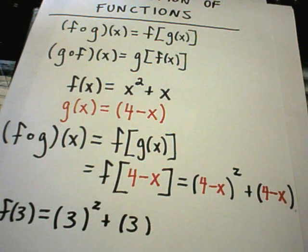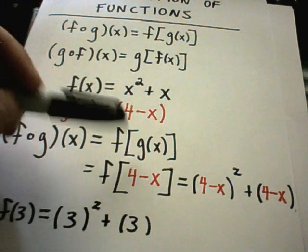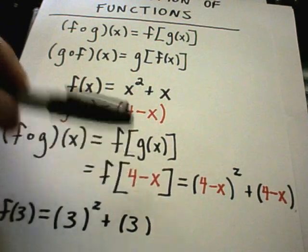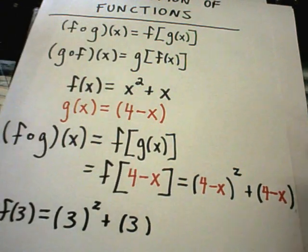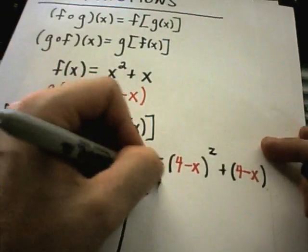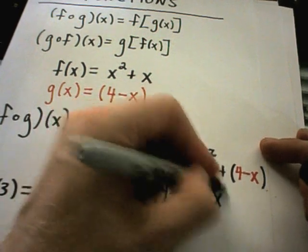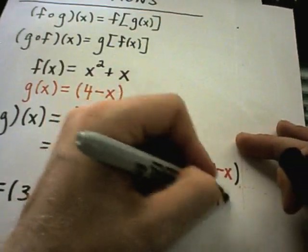This is the idea with composition of functions: instead of just substituting a simple number in, you're putting in a more complicated expression. Let's simplify this. This is (4 minus x) times (4 minus x) plus (4 minus x).